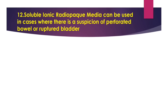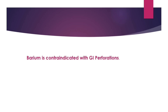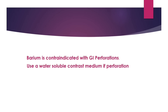Moving on to the twelfth question. Soluble ionic radiopaque medium can be used in cases where there is a suspicion of perforated bowel or ruptured bladder — true or false? The answer is option A, true. When there is a suspected perforation or ruptured bladder, a soluble ionic, that is water-soluble contrast medium, will be given. Barium is contraindicated with gastrointestinal perforation. Use a water-soluble contrast medium if perforation is suspected.